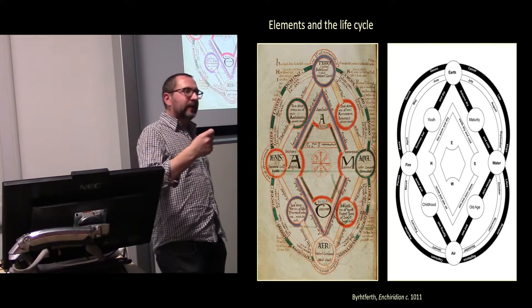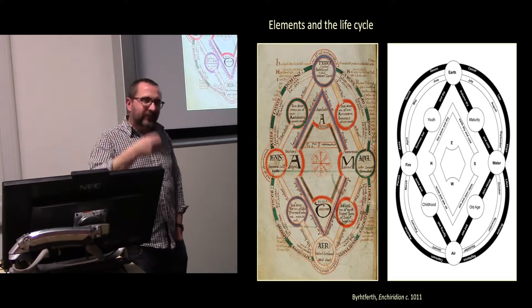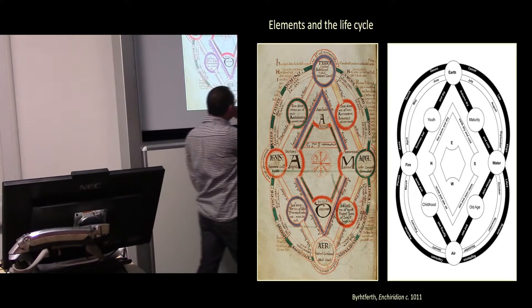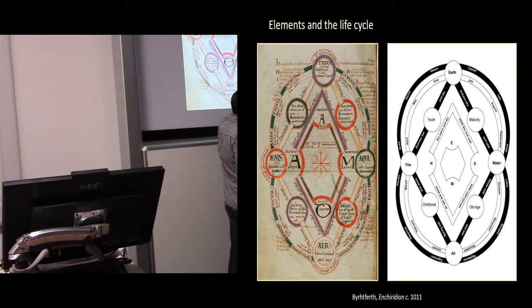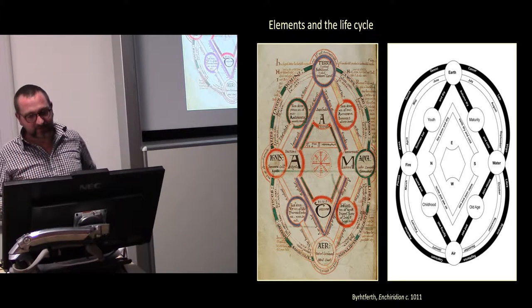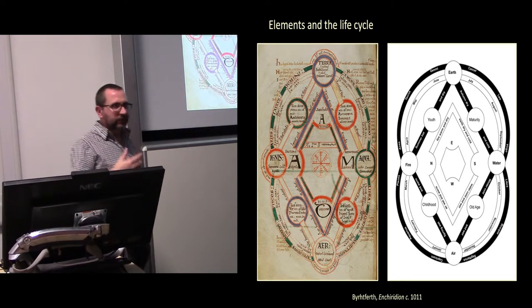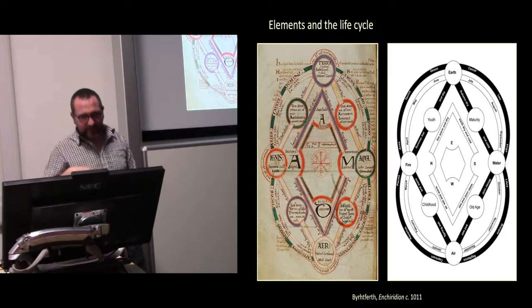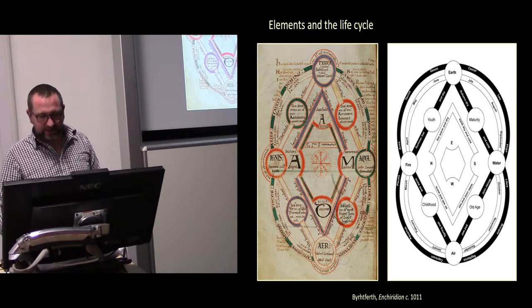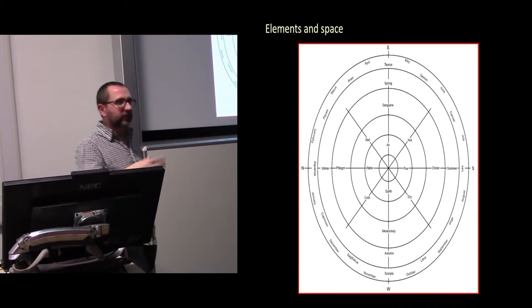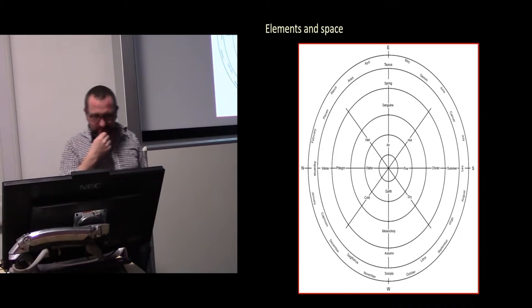The elements map onto time at a human scale. So here is Burtford's wonderful diagram here, which builds in the four ages of man into this elemental scheme. So childhood or infancy is associated with air, for example, youth with fire, and so on. And elemental qualities of people change over their life course.